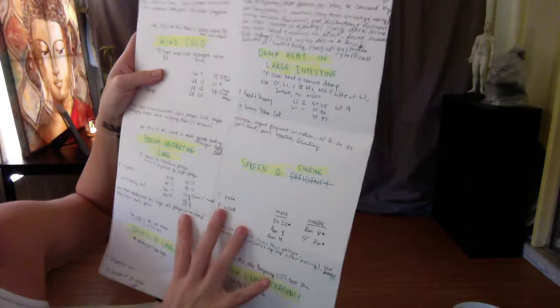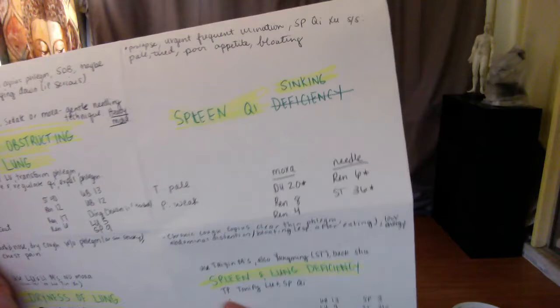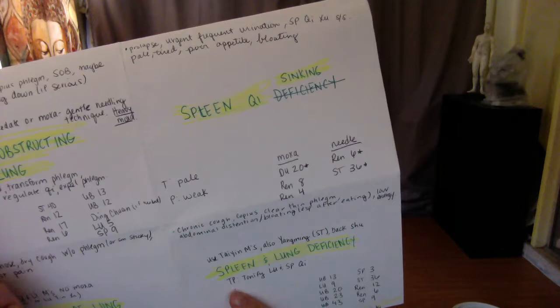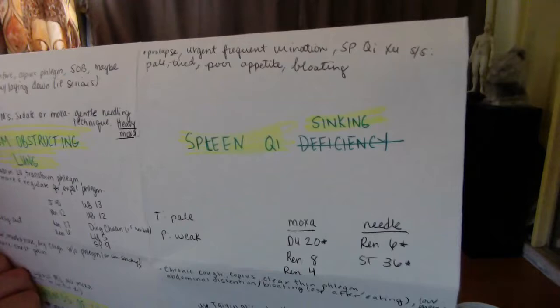I'm going to move on to the spleen pathologies Dr. Fuller told us to review. This is not as easy as people make it look. Spleen chi sinking is what we're going to be evaluated on.